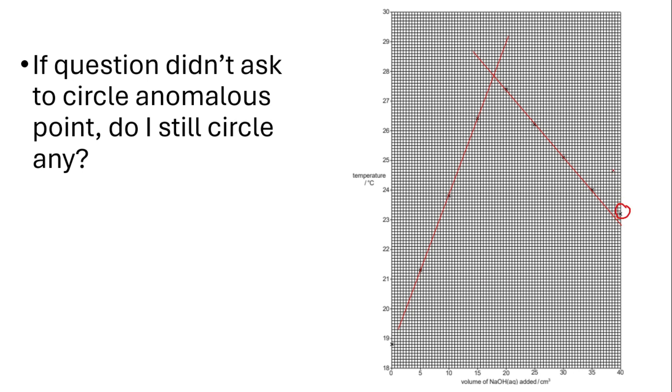This is a question from Winter 23, Paper 5, question 2. After plotting the points, I'm supposed to draw two lines of best fit: one for increasing temperature and the other one for decreasing temperature after the reaction is completed.